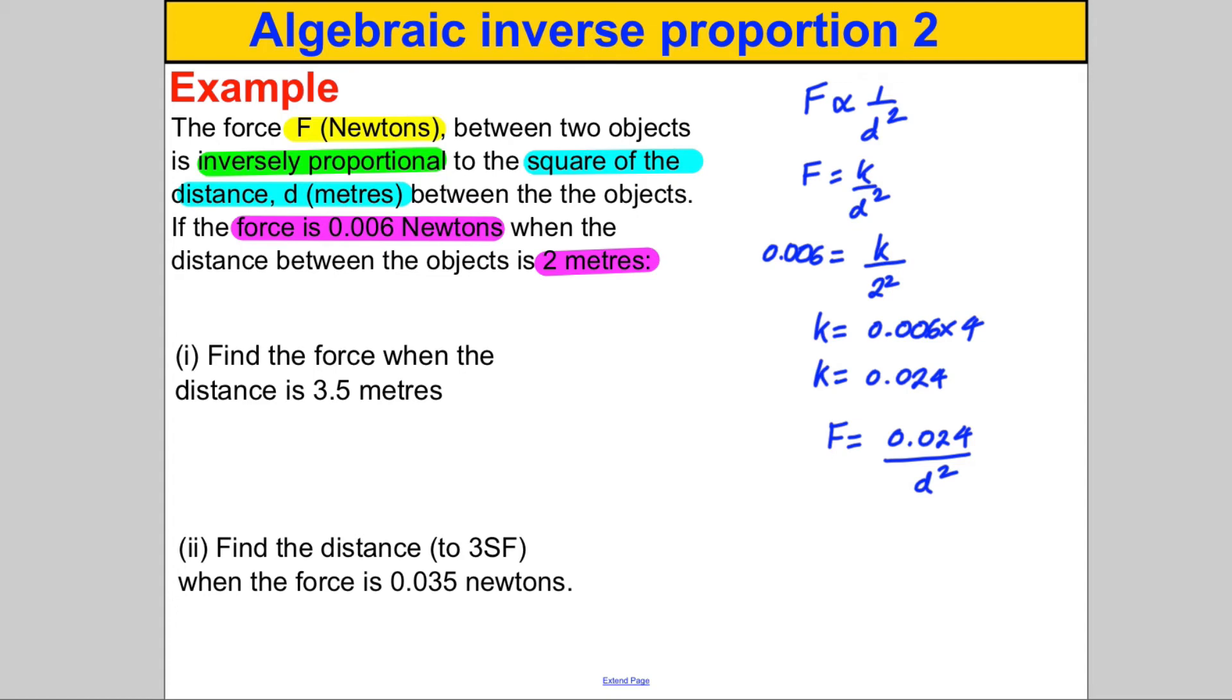Find the force when the distance is 3.5 meters. So we have our distance D is 3.5. All we've got to do is substitute that in here. Force is therefore equal to 0.024 divided by 3.5 squared. All you've got to do is tap that in the calculator and you will get yourself an answer that is a non-terminating decimal.